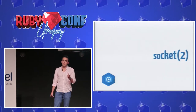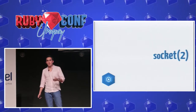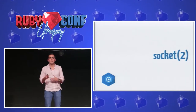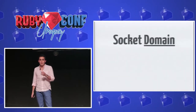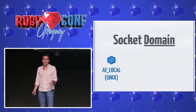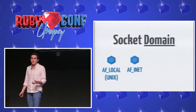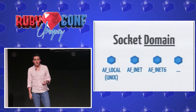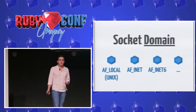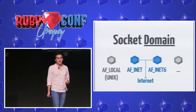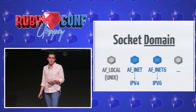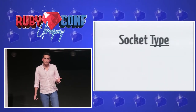In Unix, we have a system call which is socket(). This socket receives three arguments. The first is the domain. We have several domains: the local domain, which is a Unix socket; AF_INET; AF_INET6; and there are more. We're interested in two for TCP circuits — INET supports IPv4, and INET6 supports IPv6.